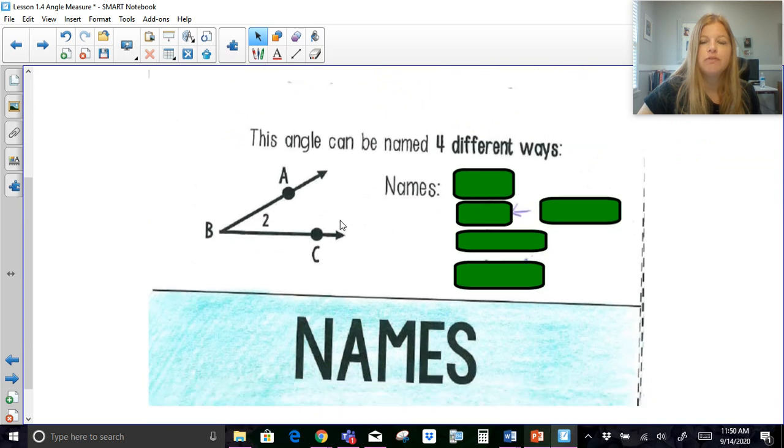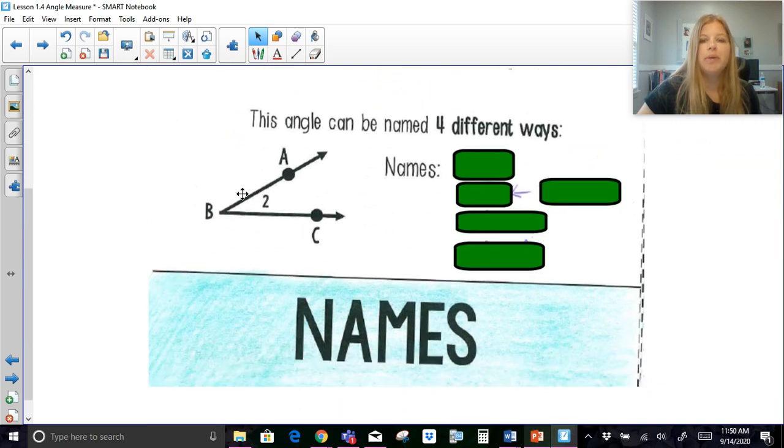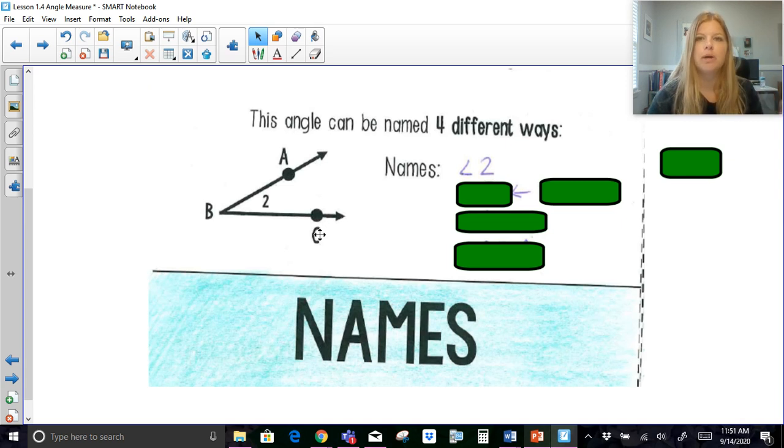This angle here can be named in four different ways. So based on this diagram, I could name this angle in four different ways, and no matter how I name it, we'll all know we're talking about that angle right there. So the first angle would be if I just called it angle two. Now, I want you to know that when you see a number here inside of the angle, and it doesn't have the degree symbol, it usually represents the angle as a number. So I can call it angle number two.